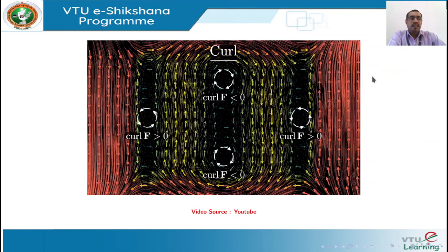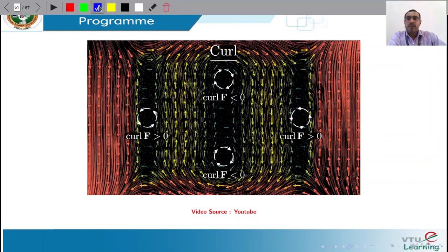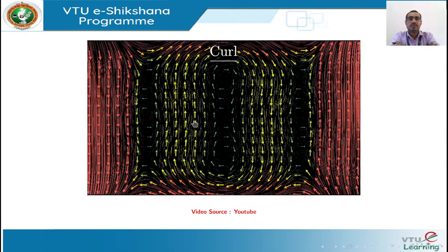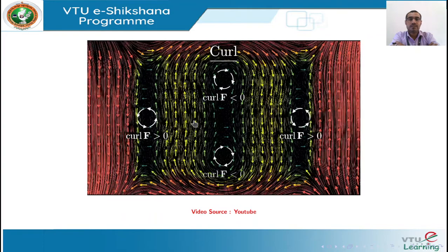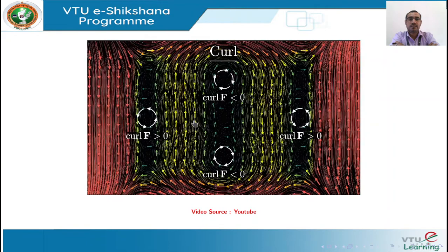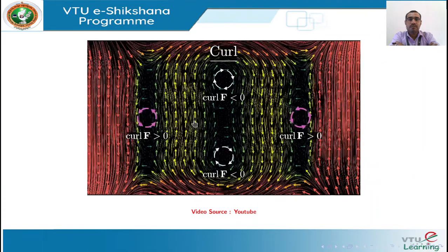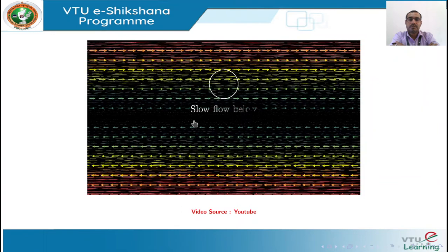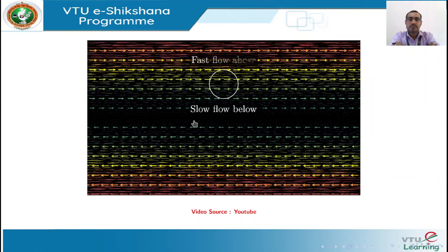For the curl at a given point, think about fluid flow around it — if you dropped a twig fixing its center, would it tend to spin? Regions where rotation is clockwise have positive curl; counterclockwise regions have negative curl. A point inside a region where flow is slow at the bottom but quick at the top would also have non-zero curl due to the net clockwise influence.